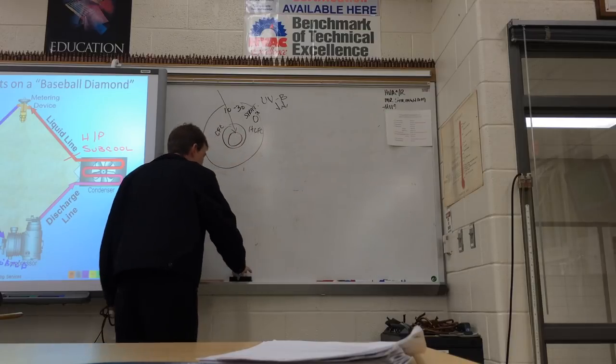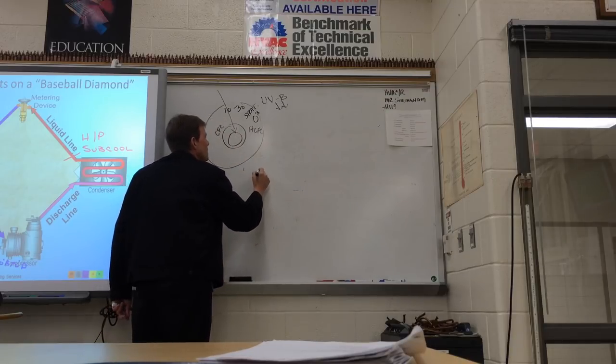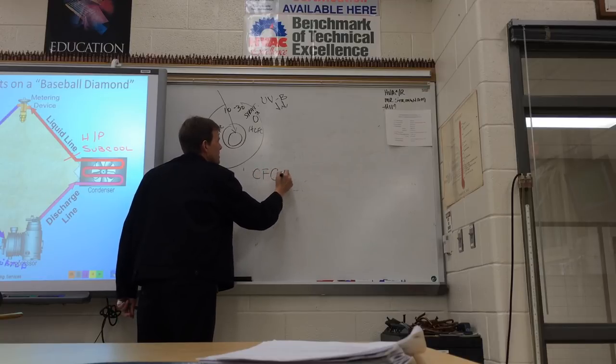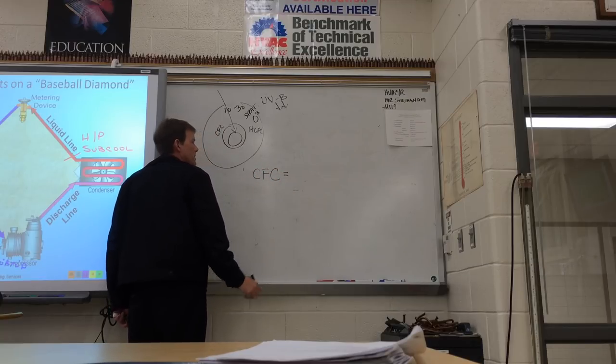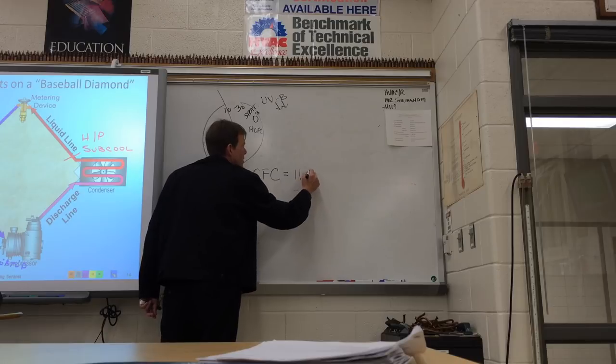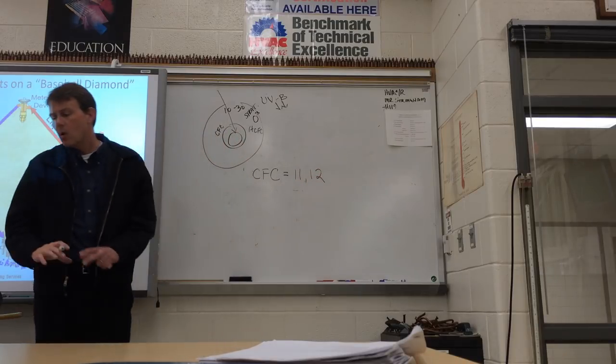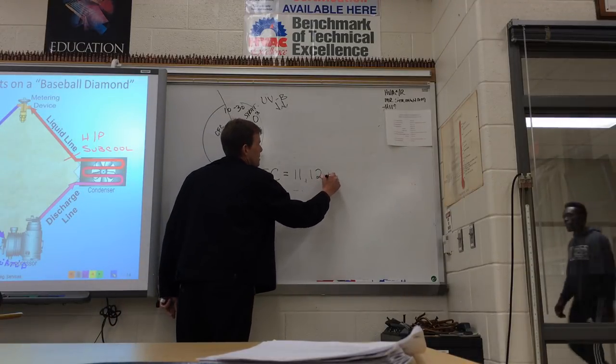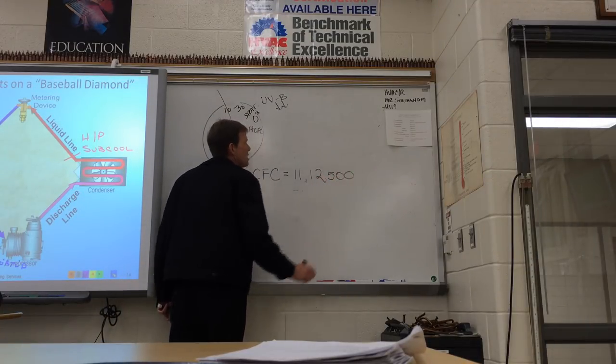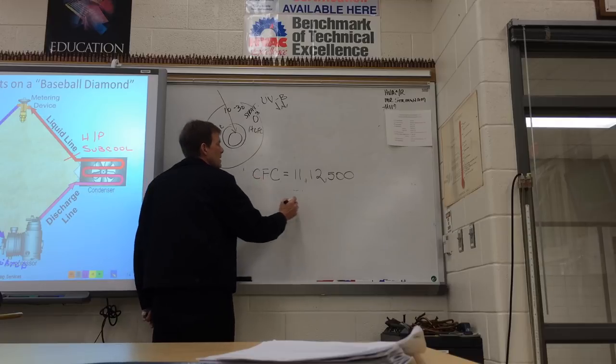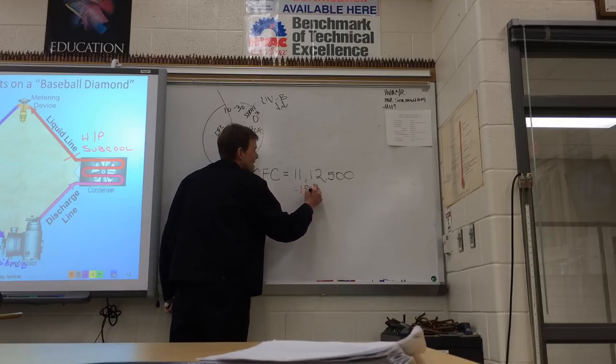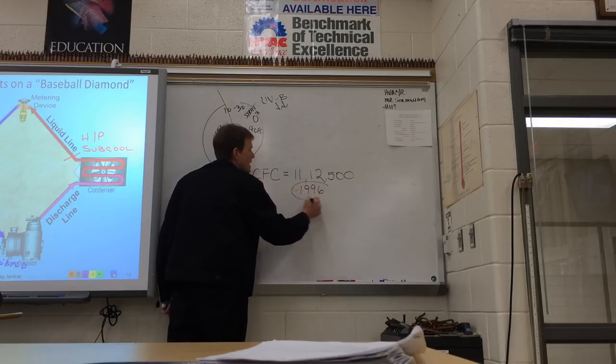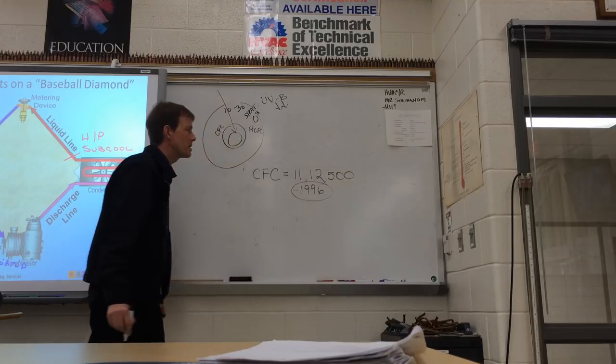Now there's a hierarchy to the system. CFCs were the worst. CFCs are chlorofluorocarbons and that is like R11 or R12. They were the worst ones. There was one more that they talk about with ESCO's test and that's R500. So these were banned in 1996. They stopped making them after 1996. January of 96.